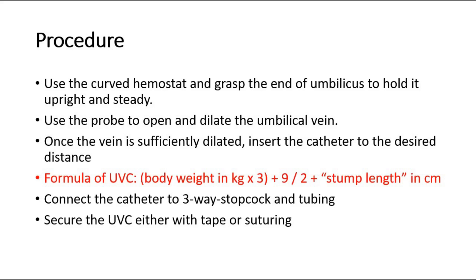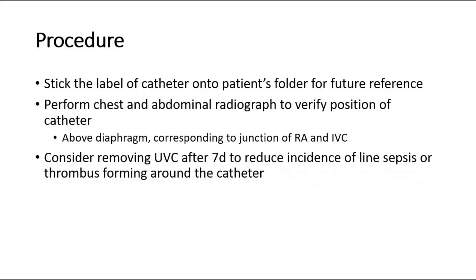Then connect the catheter to the three-way stopcock and tubing. Secure the UVC either with tape or suturing. Stick the label of the catheter onto the patient's folder for future reference. We can also perform a chest and abdominal radiograph to verify the position of the catheter. The ideal position would be above the diaphragm, corresponding to the junction of the right atrium and inferior vena cava.